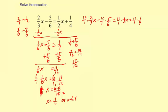12 times 2 is 24 divided by 1 times 3 which is 3 and that's x minus 12 times 5 which is 60 over 1 times 6 which is 6 equals 12 times 1 which is 12 divided by 1 times 2 which is 2. That's x plus 12 times 1 which is 12 over 1 times 4 which is 4. Okay now let's simplify and if we did this right all the fractions should go away. 12 divided by 3 is 8 so that's 8x minus 60 divided by 6 which is 10 equals 12 divided by 2 which is 6 and then x plus 12 divided by 4 which is 3.